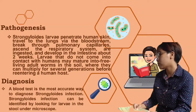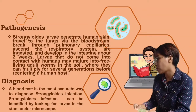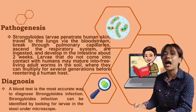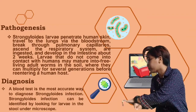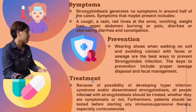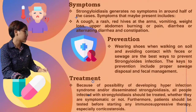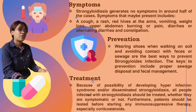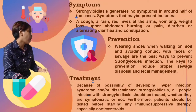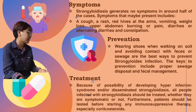For the diagnosis, a blood test is the most accurate way to diagnose Strongyloides infection. Strongyloides infection can be identified by looking for the larvae in the stool under the microscope. For the symptoms, Strongyloides generates no symptoms in around half of cases. Symptoms that may be present include a cough, a rash, red hives at the arms, vomiting, weight loss, upper abdomen burning or pain, and diarrhea or alternating diarrhea and constipation.